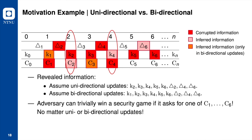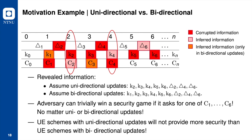Hence, the adversary can trivially win a confidentiality game if it asks for C1 or C2; this result holds for both uni and bidirectional update settings. Similarly, we can consider C3, C4, C5, and C6. This example implies that in a confidentiality game, the adversary either triggers the trivial win conditions in both uni and bidirectional update settings, or never triggers them in either setting.